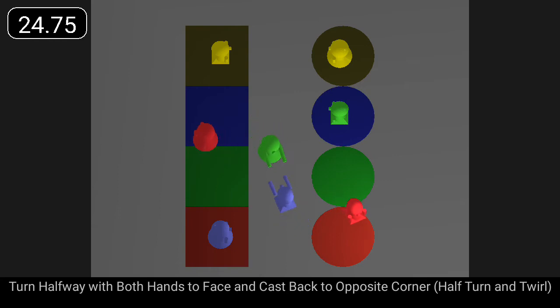First couple dance corners pass and turn, while corners turn halfway with both hands to face and cast back to opposite corner.